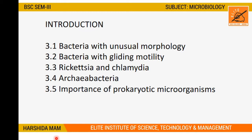We have a total of five topics. First, 3.1: Bacteria with Unusual Morphology is our main topic, with three sub-points we will discuss later. Second, 3.2: Bacteria with Gliding Motility is our main topic — these are motile organisms that have certain organelles or body parts which enable movement.